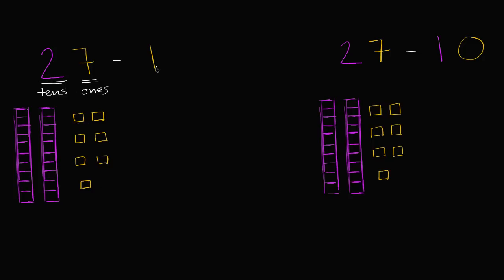Now I'm going to subtract one. I'm subtracting one one is another way to think about it because this is in the ones place. Let's take away one like that. What am I left with? Well, I still have my two tens, so I still have a two in the tens place. Now how many ones do I have?